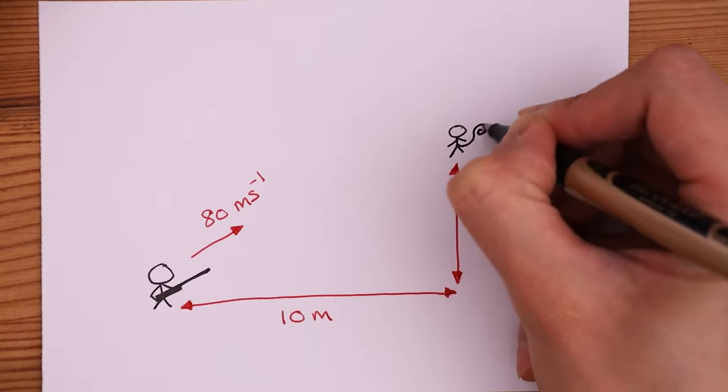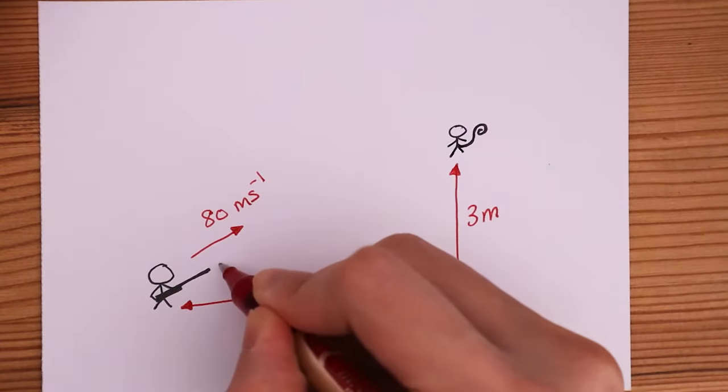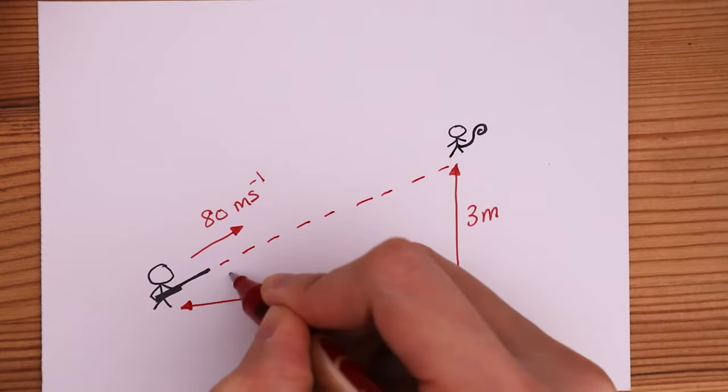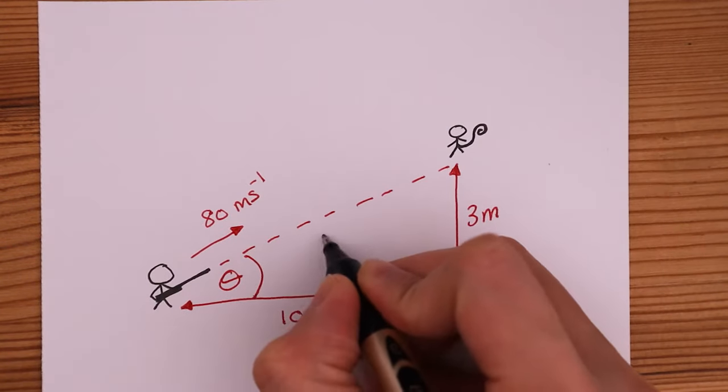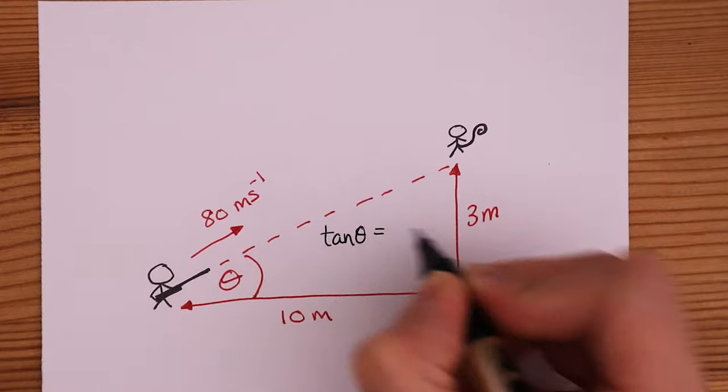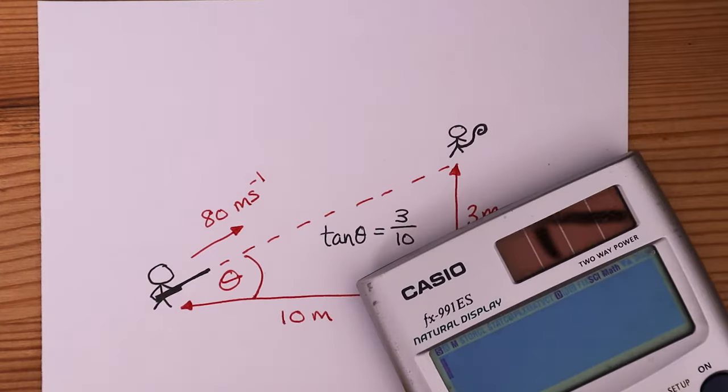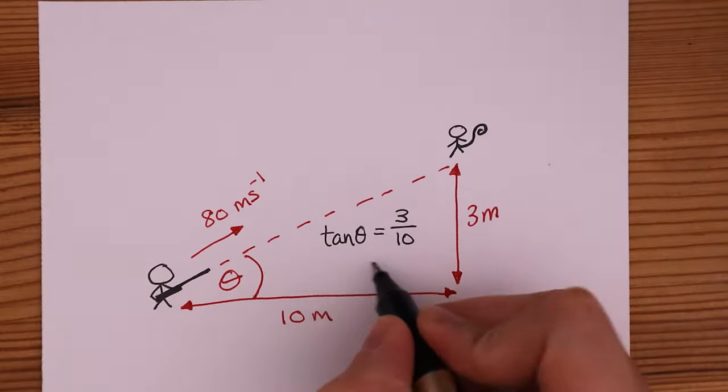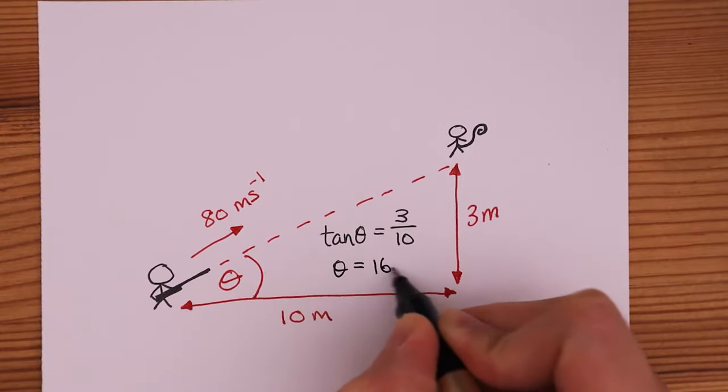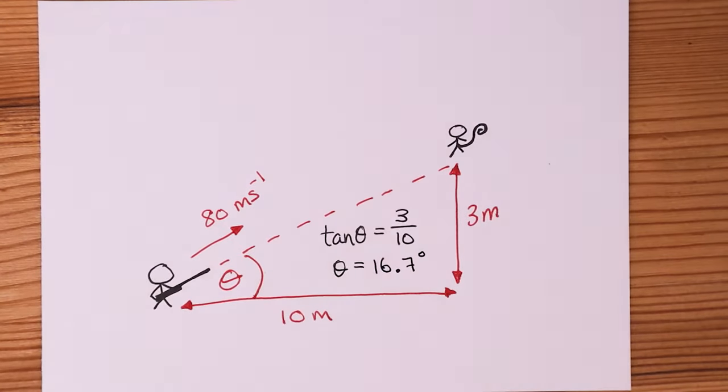Before we can take this any further, we have to work out the angle that this triangle makes. We can use trigonometry. Tan theta is equal to opposite over adjacent. So theta is tan inverse of 3 over 10. So if I plug this into the calculator, that gives us an angle of 16.7 degrees.